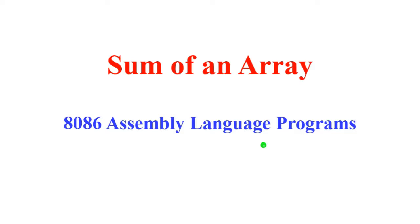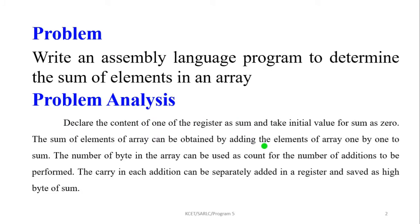In this video we are going to write an assembly language program for the sum of an array. The problem is to determine the sum of elements in an array. We will declare the content of one register as the sum and take the initial value for sum as zero. The sum is obtained by adding elements one by one to the sum. The number of bytes in the array is used as a count for the number of additions to be performed. The carry in each addition can be separately added in a register and saved as the high byte of sum.